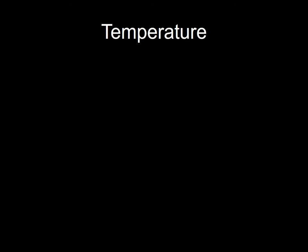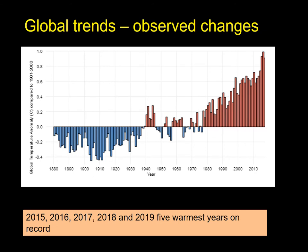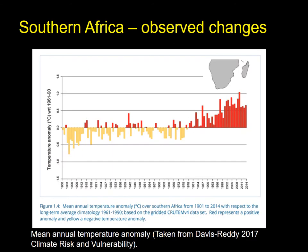Starting with temperature. This graph depicts observed changes in global temperatures — surface air temperatures — and it plots changes in temperature over time against the long-term mean temperature. You can see that since about 1940 there's been a consistent increase in mean annual temperature, with the last five years being the warmest years on the instrumental record. Looking at southern Africa, this trend is consistent in our region and we've had an increase in mean annual temperature consistently since the 1970s.